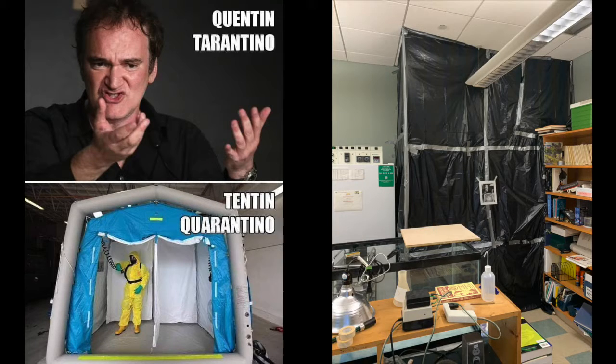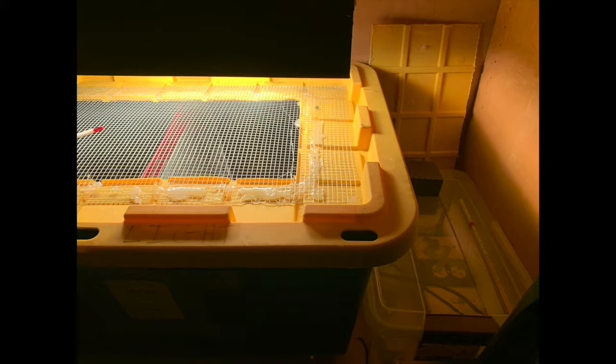The first step was to design and construct an enclosure that would facilitate the maintenance of a control group stored in darkness and the conditioning of an experimental group subjected to flashing light.